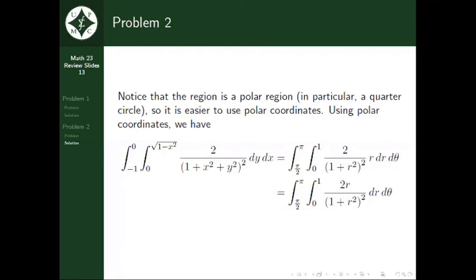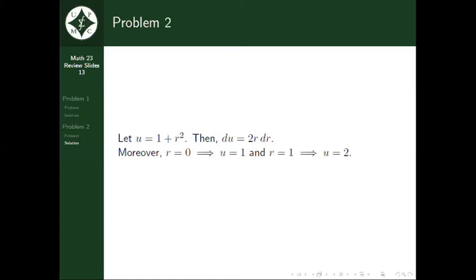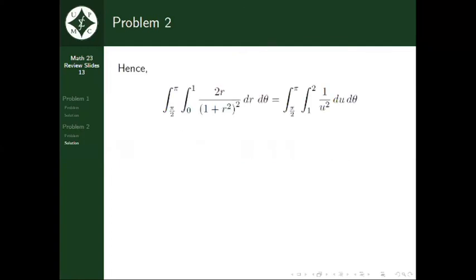Using u-substitution, we let u equal 1 plus r squared. Then du equals 2r dr. From the limits of r from 0 to 1, we get u equals 1 when r equals 0, and u equals 2 when r equals 1. Hence, using u-substitution, we get a double integral of 1 over u squared du d theta, with u integrated from 1 to 2 and theta from pi over 2 to pi.